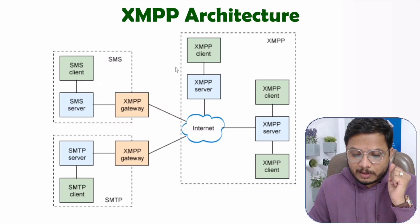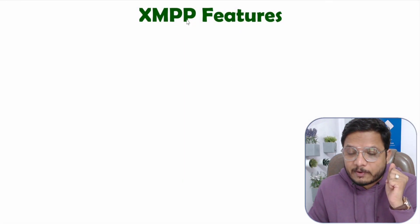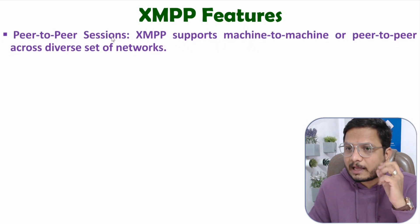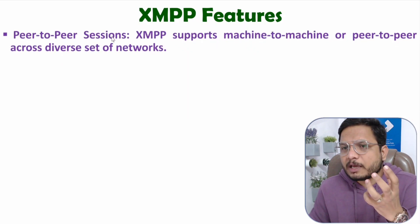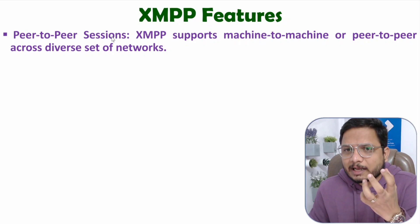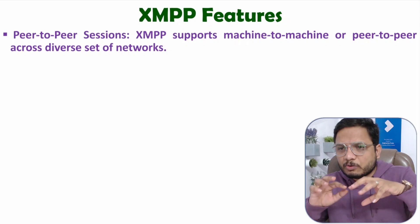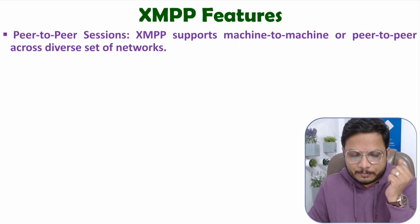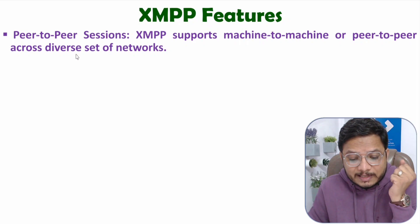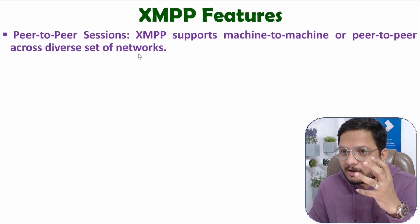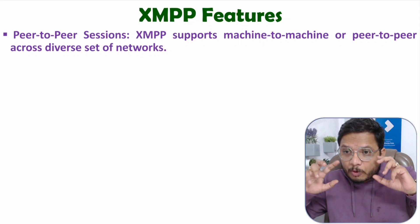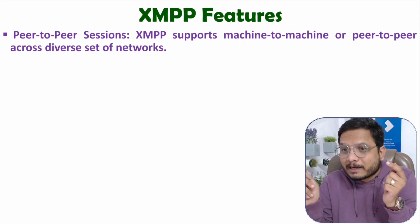Now let's talk about the features of XMPP. First is peer-to-peer sessions — machine-to-machine interconnection is possible with XMPP, where machine-to-machine message forwarding works across a diverse set of networks. As shown in the architecture, different types of protocols can even be interconnected with each other.